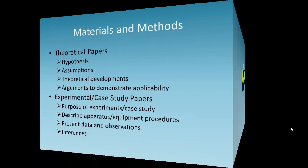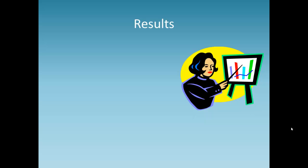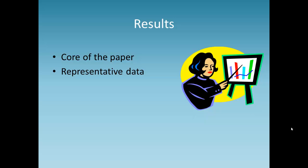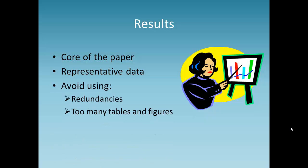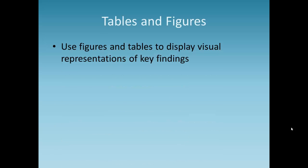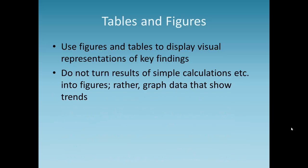The core of your paper will be the results section. Use representative data, but avoid redundancies and too many tables and figures. Do not tabulate supplementary data, lab numbers, results of simple calculations, columns showing no significant variation, or unrelated data. The grouping of data should be logical. Do not turn described data into figures; instead, graph data that show trends.